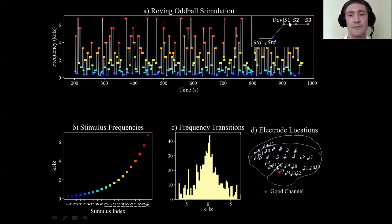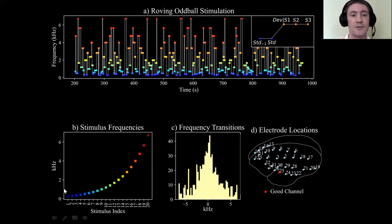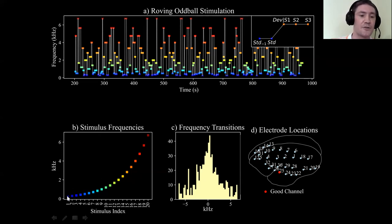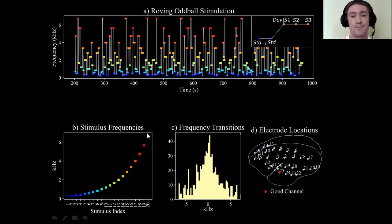The one preceding the standard might be denoted standard-minus-one, whereas the first tone in each tone train was considered the deviant, or labeled S1, because it's the first stimulus presentation of that frequency. The subsequent stimuli are S2 and S3. Panel B shows the different frequency tones used in this experiment — 20 different frequencies ranging from around 300–500 Hz up to almost 7 kHz.